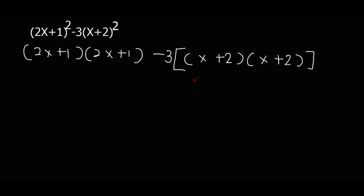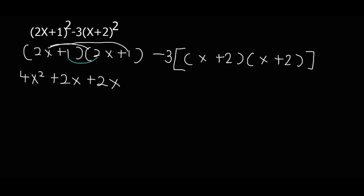It's always advisable: when you see a number outside a big bracket, multiply all the brackets first. Because multiplying this negative 3 with only one bracket instead of all brackets is a mistake most people make. So make sure — when there's a number and a bracket — multiply all the brackets first. Method number 1: 2x times 2x is 4x squared.